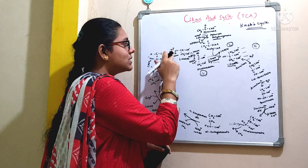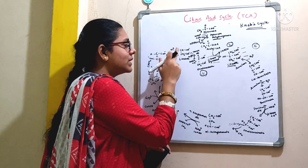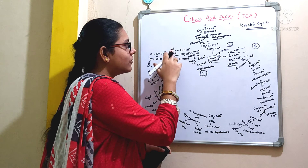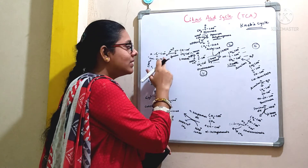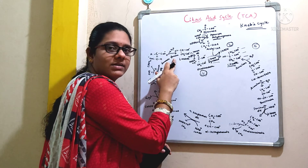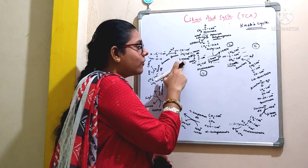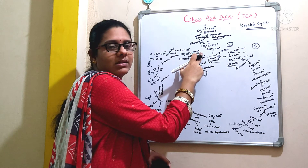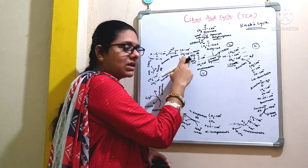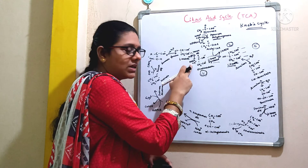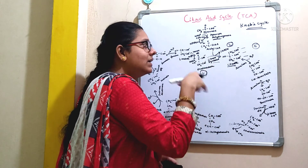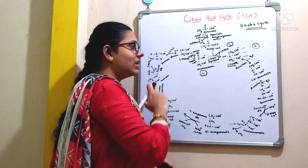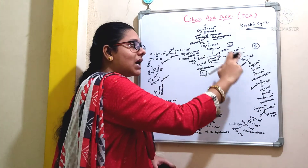This fumarate will again undergo the step of hydration. With the addition of a water molecule, when this fumarate undergoes the process of hydration, it gives rise to a compound called malate, and this reaction is catalyzed by an enzyme called fumarase. Coming to the final step, this so-formed malate is transformed to oxaloacetate by the action of an enzyme called malate dehydrogenase, and those hydrogen atoms are accepted by NAD+, giving rise to NADH + H+. Once the oxaloacetate is formed, it can again condense with another molecule of acetyl-CoA giving rise to citrate again — that is the reason this pathway is a cyclic process.